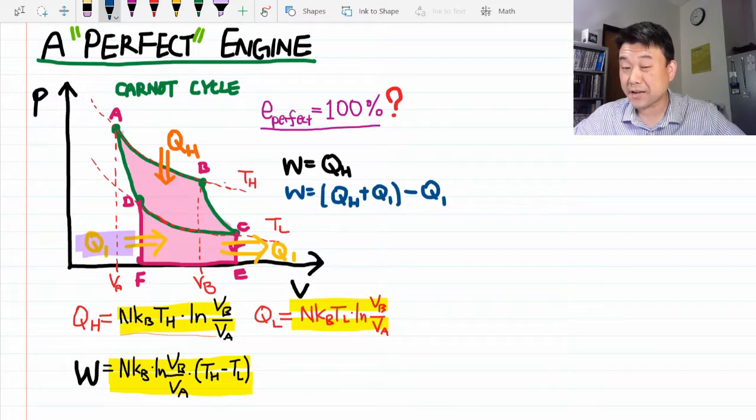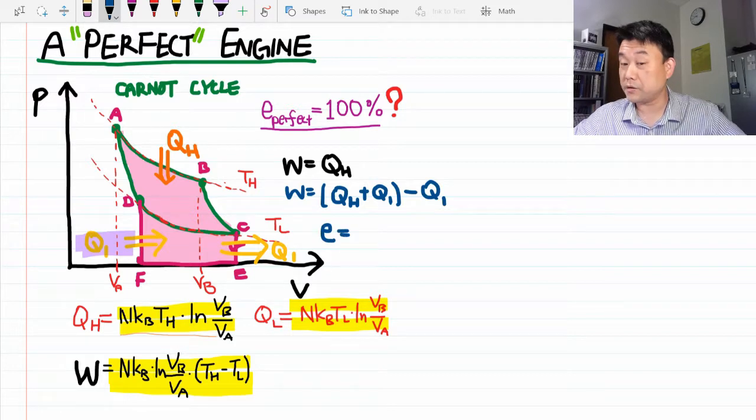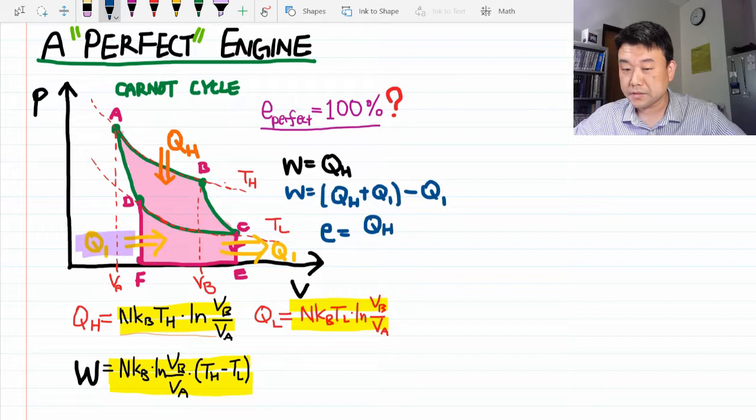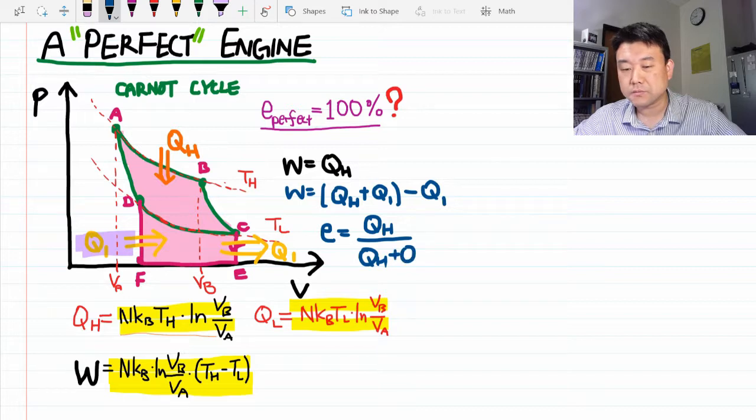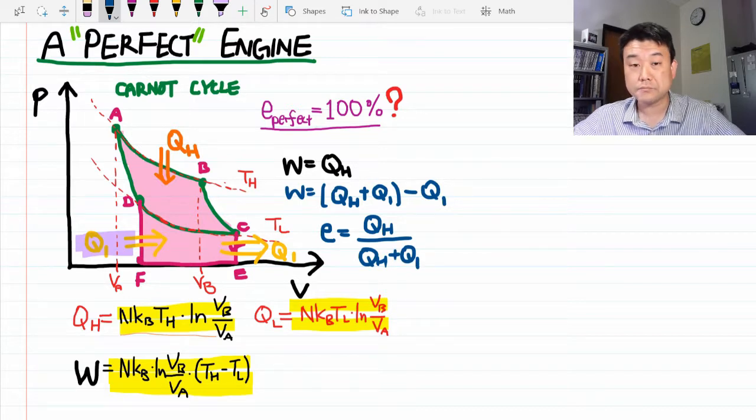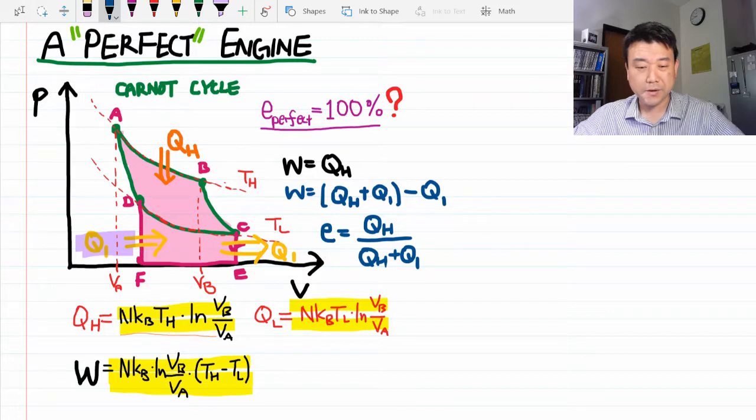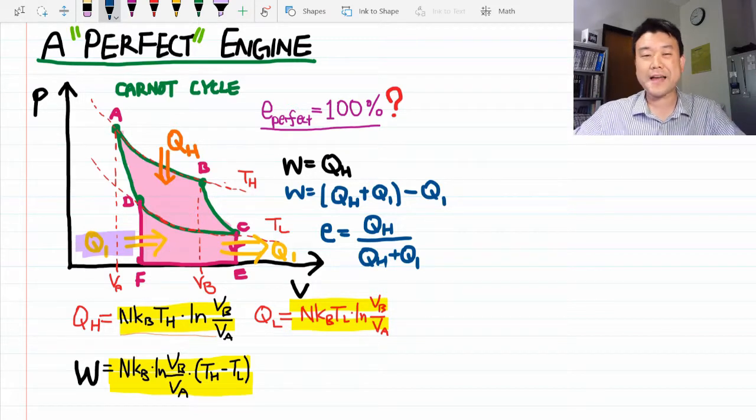And the efficiency actually is the work done, QH, divided by a different denominator, QH plus Q1. Now, you might want to treat it like, but it's the same Q1, don't they cancel out?